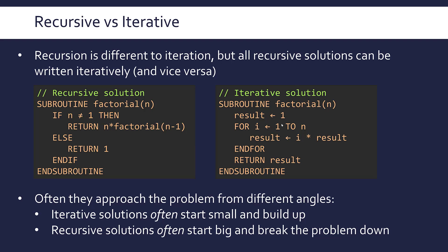Whereas recursion tends to work better if you start big and then use your general cases to break it down into smaller and smaller problems. The way the recursive factorial code works is: we pass in our argument for factorial and instead of a solution working its way up towards it, it's going to start calling itself with smaller versions of N — constantly calling itself with smaller and smaller versions of N until we reach N equals one and we reach our base case.